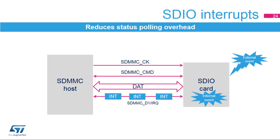The interrupt concept is used to inform the host of changes in the card status using the SDMMC_D1 IRQ pin in 1-bit or 4-bit data bus mode. SDIO interrupts are sent from the card to the SDMMC host when the card detects an external event. The SDMMC host detects interrupts sent on the SDMMC_D1 pin once the SDIOEN configuration bit in the data control register is enabled. While the DPSM remains in idle state, all low levels on the SDMMC_D1 pin are detected as interrupts from the card to the host.